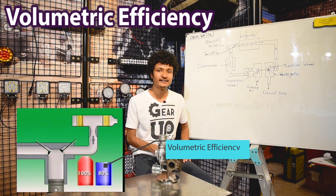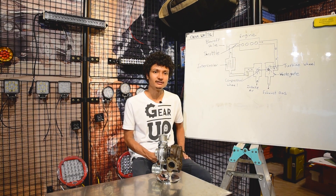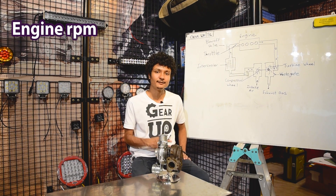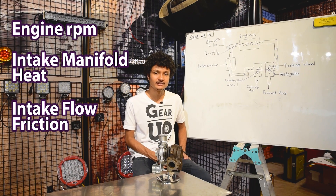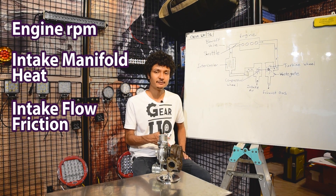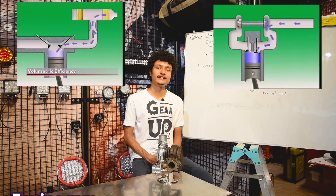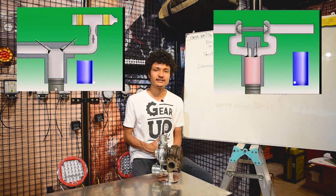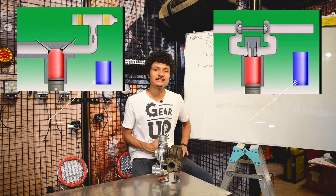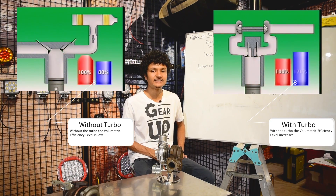The volumetric efficiency needs to be optimized by volume. The engine factors in RPM, load, heat, flow friction, and temperature. If you need to compress the charge, you can adjust the volumetric efficiency of the engine.